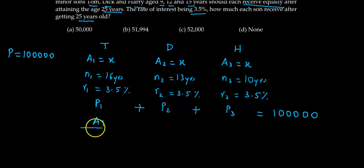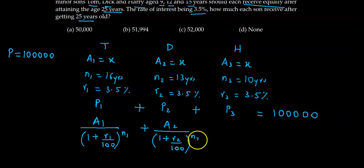This will be A1 divided by (1 plus r upon 100) raised to n. Again P2 will be A2 divided by (1 plus r2 upon 100) raised to n. And P3 will be A3 divided by (1 plus r3 upon 100) raised to n3. And this total should be the total present value which is 1 lakh.